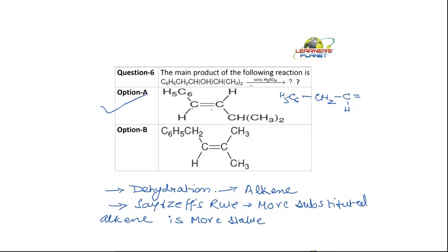I am just matching the product we got with option A. It is C with CH₃ and CH₃. Is it option A? Actually, my structure is not matching with A — my answer would be B: C₆H₅-CH₂-C=C with CH₃ and CH₃. That is C₆H₅-CH₂-CH=C(CH₃)₂.